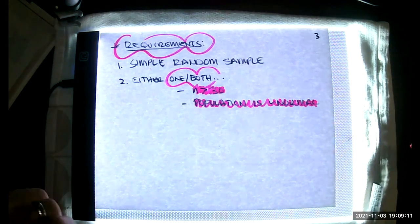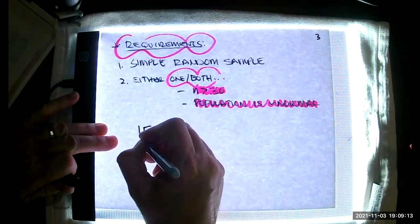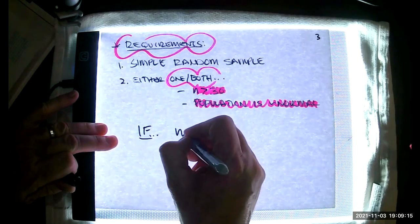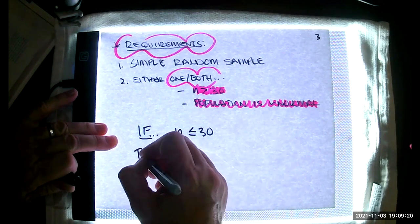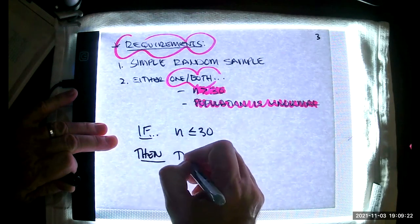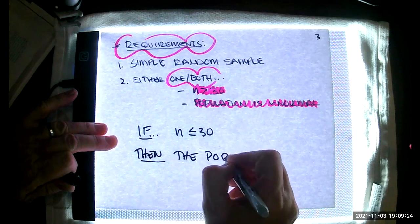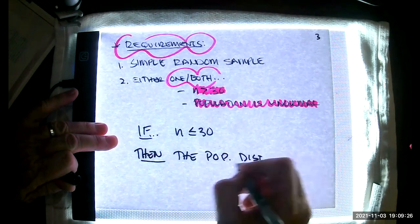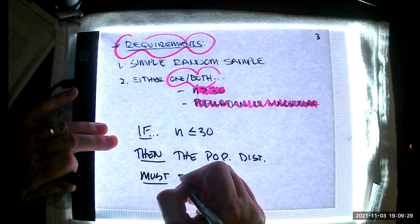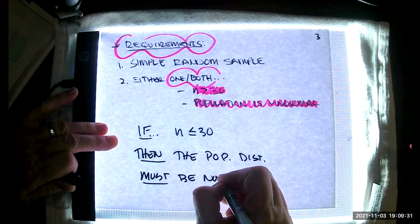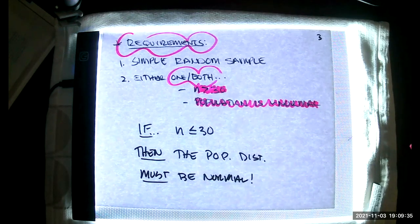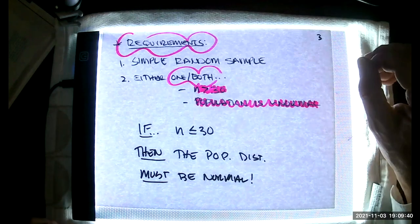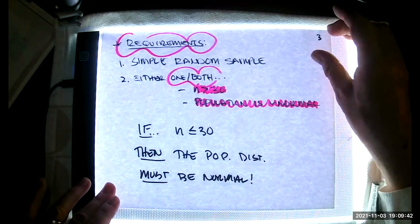In other words, if your sample size is less than or equal to 30, then the population distribution must be normal. Otherwise, we cannot use the techniques of this section. By the way, only you and I will know. The calculator will never know.